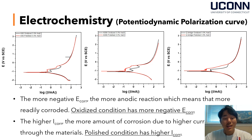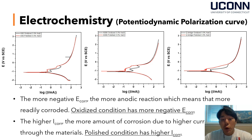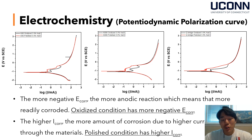These are my samples' potentiodynamic polarization curves. Iron oxide is not a passive film, so we can see a short passive region in the curve. Corrosion potential is interpreted as how easily corrosion happens, and current is interpreted as how severe corrosion happens. The more negative the corrosion potential, the more easily corrosion occurs. The higher the corrosion current, the greater the amount of corrosion. Oxidized samples occupy a more negative corrosion potential and have a lower corrosion current, meaning they are more easily corroded but the amount of corrosion is lower than that of polished samples. There are still many things to analyze from this curve, and I am working to do more with it.